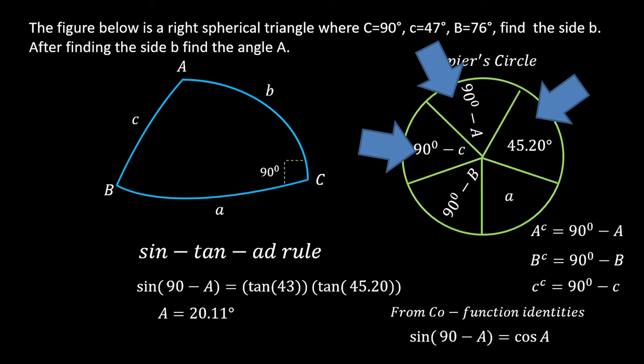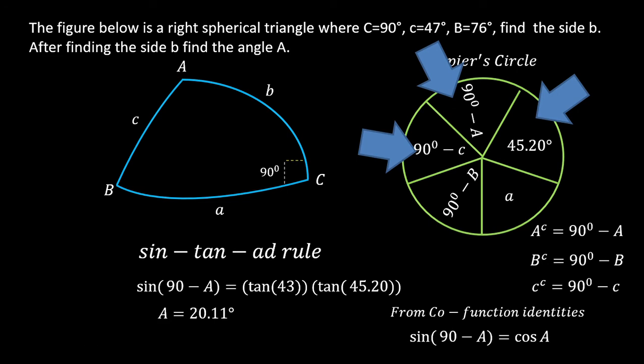That is how you solve a right spherical triangle. You have to choose whether to use the sin-cos-of rule or the sin-tan-add rule based on your given values. Since we have sufficient given values, we could continue to find the remaining parts, but for today this concludes our example on how to solve the right spherical triangle. Thank you.